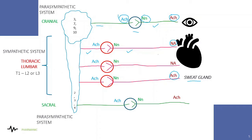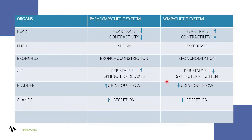Now let us see what happens when the sympathetic or parasympathetic system gets activated. In the case of the heart, when the sympathetic system is activated, the heart rate and contractility increase, which increases cardiac output. The increased blood supply throughout the body helps us in emergency or stressful situations.